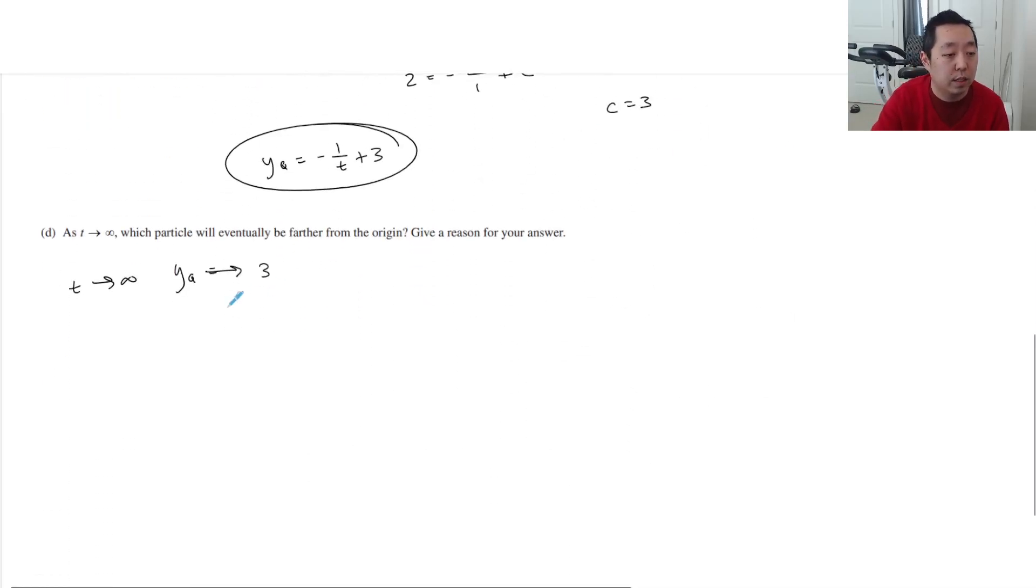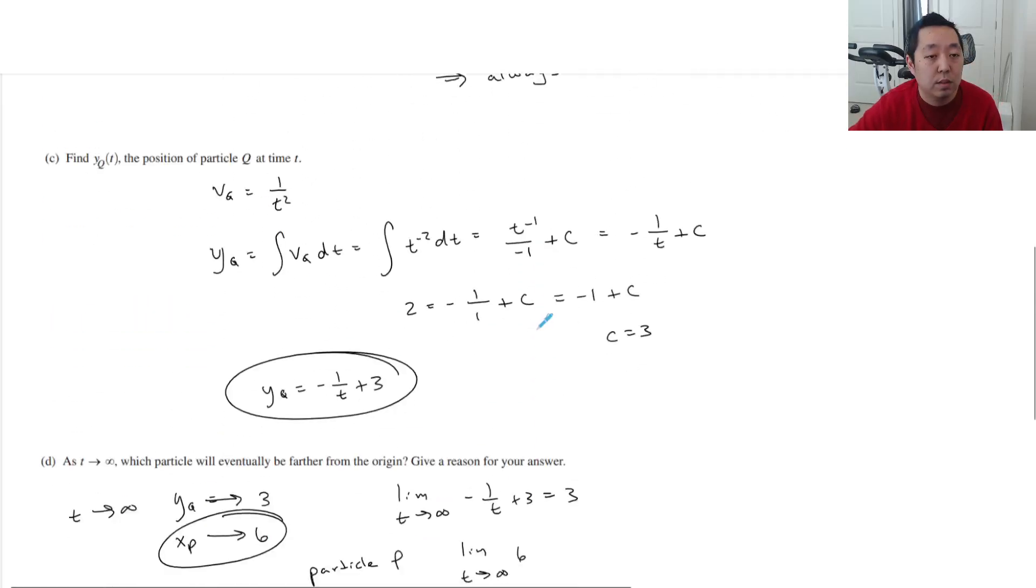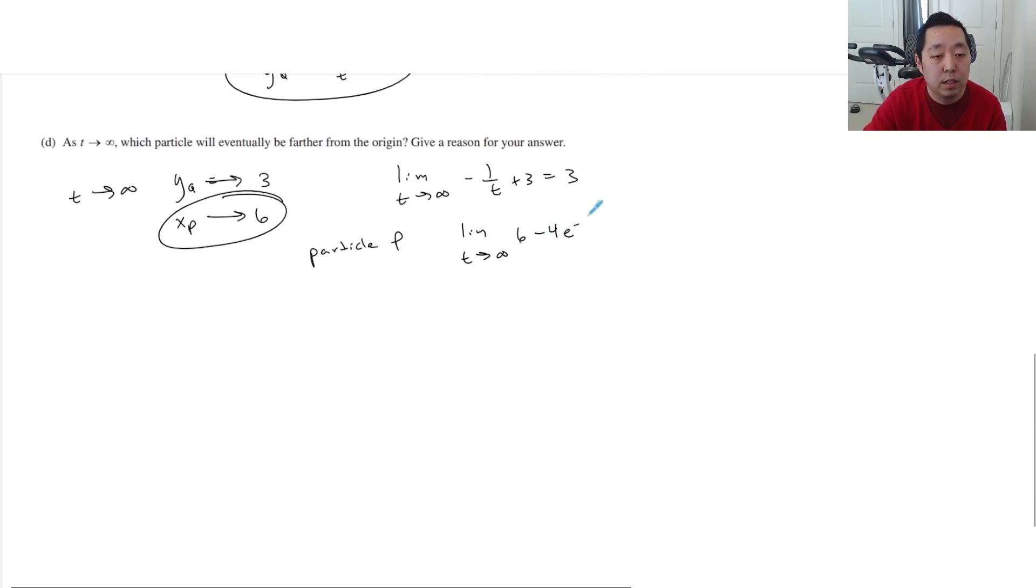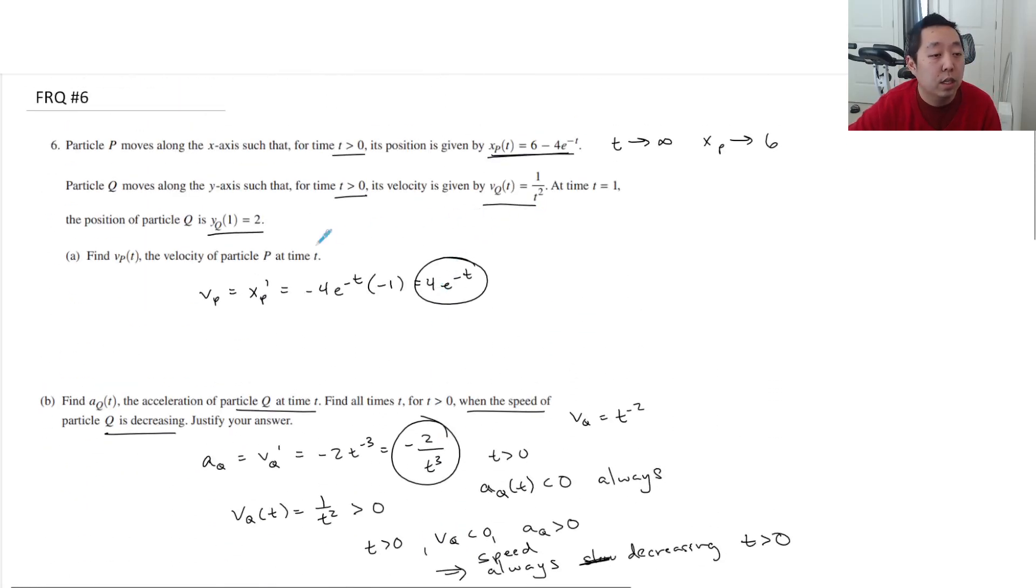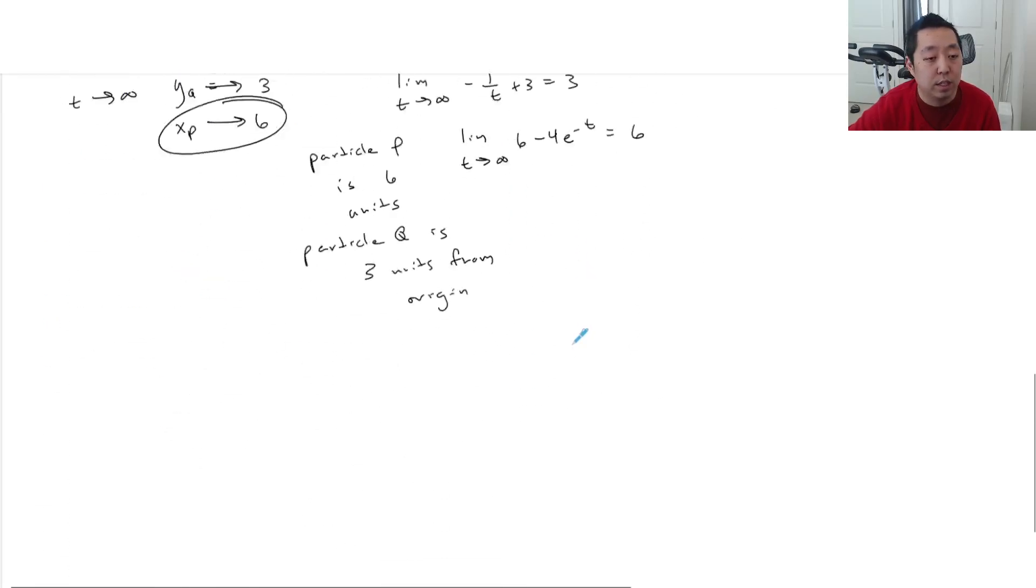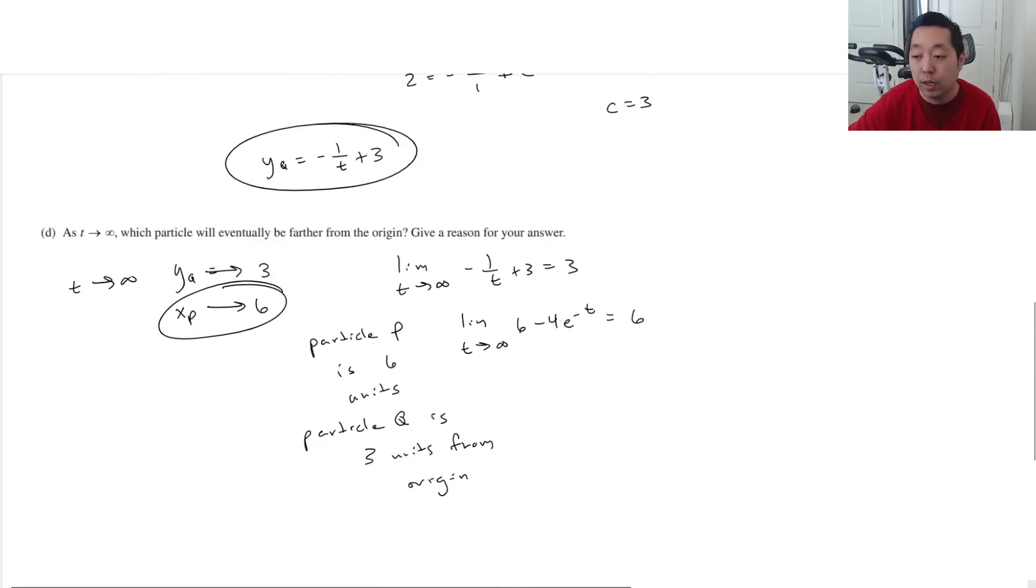So then we would say, you know, XP of, the x of p is going to approach 6. So this guy does. So particle p. And you may want to demonstrate that. You want to say the limit as t goes to infinity, negative 1 over t plus 3 equals 3, and the limit t, if you want to do it kind of explicitly, of the 6, what was it, 6 minus 4 e to the negative t. It's sufficient to say that that's 6. And so particle p is 6 units. Particle q is 3 units from the origin. Those are both position equations. I want to just double check that they were position equations. Particle position there, and then there's a position equation. Yeah, that's fine. There's nothing tricky about that. Sometimes I just want to double check my wording. I read it correctly there. Okay. All right.